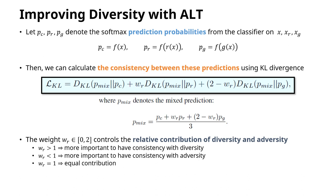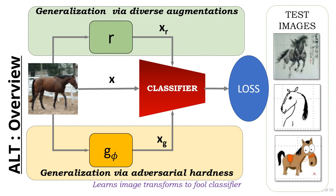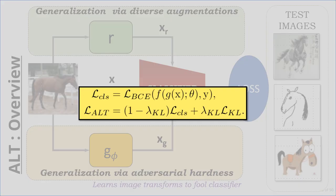Using these two modules, we impose a consistency constraint on the classifier's predictions for the original input as well as the transformed inputs using KL divergence. Here is the overview of our approach showing the different modules in ALT and the loss function, which combines the classifier loss with the consistency constraint.